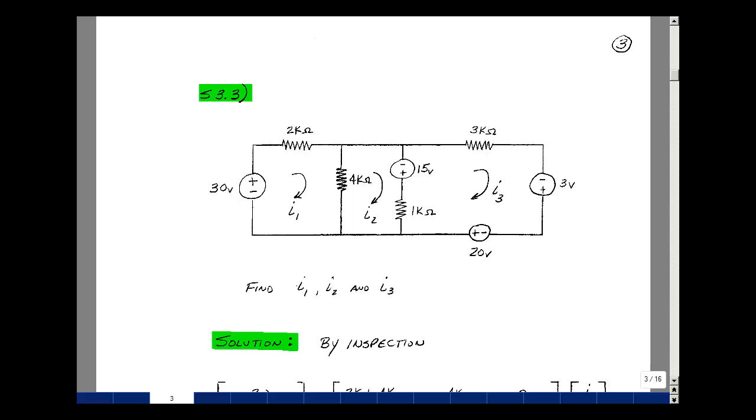This lesson deals with supplemental problem 3.3. You can find this problem in the ECE-201 eBook in the Chapter 3 Supplemental Problems on page 3. Given this circuit containing only resistances and voltage sources, can you solve for the three mesh currents I1, I2, and I3?